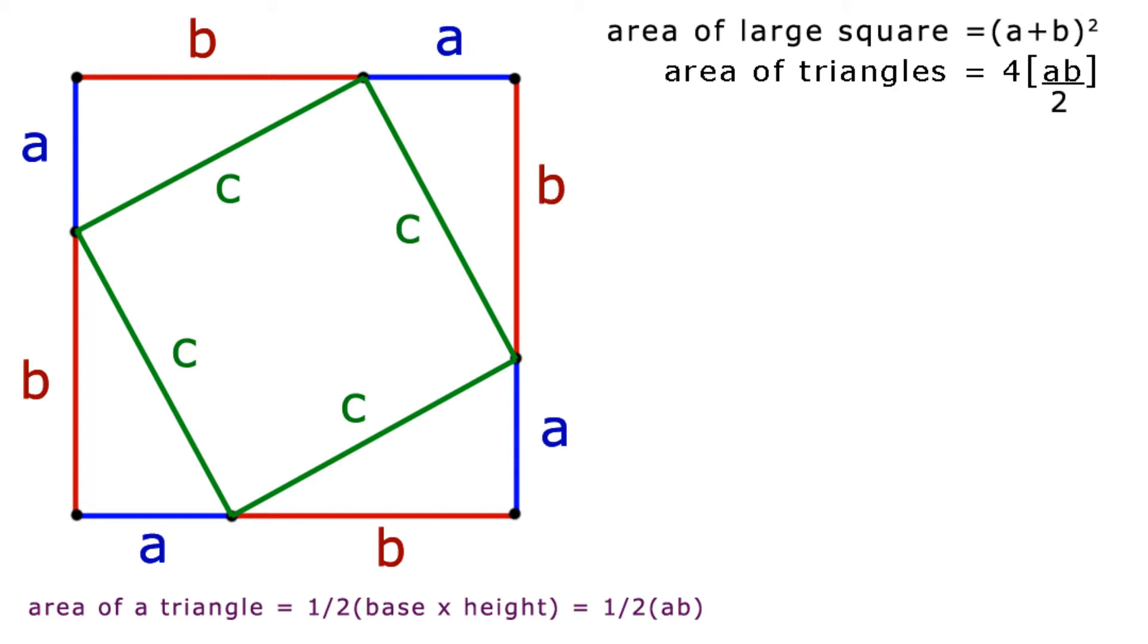The area of the smaller inscribed square is C squared. Putting all this in a simple equation. The area of the large square equals the area of the triangles plus the area of the small square. So A plus B all squared is equal to four times AB over two plus C squared.